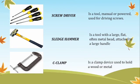Next is sledge hammer — a tool with a large, flat, often metal head attached to a large handle. Next is C-clamp — a clamp device used to hold wood or metal.